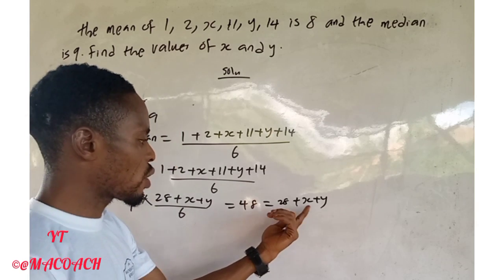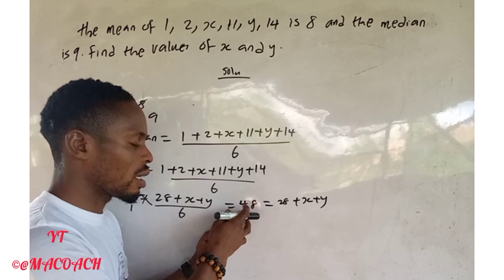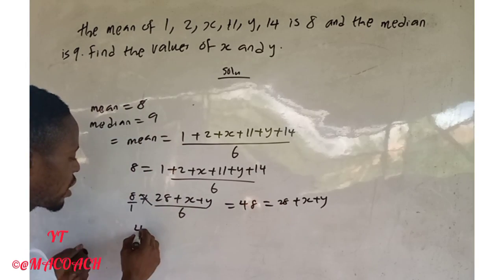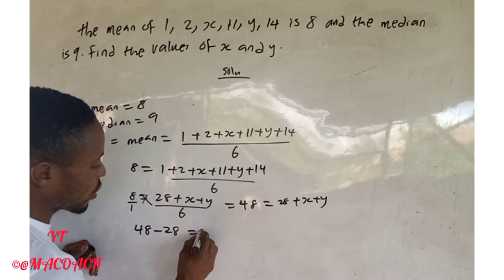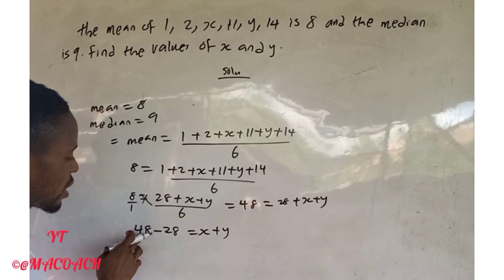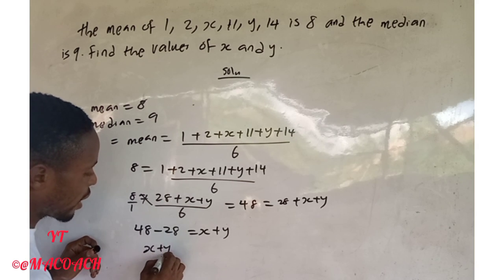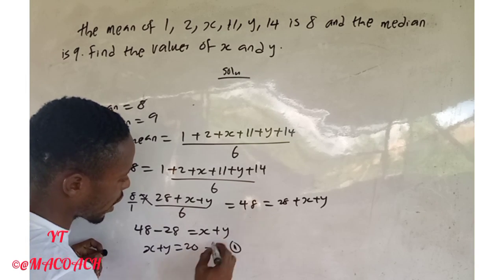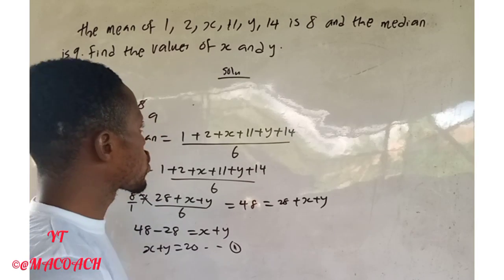Collecting like terms, take 28 to the other side: 48 − 28 = s + y. So s + y = 20. Let's call this equation one.